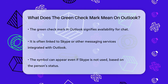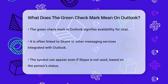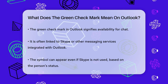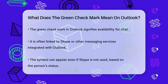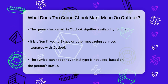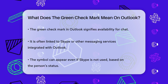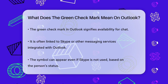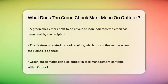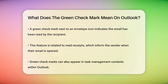When you see a green check mark or tick on someone's profile picture, it usually indicates that the person is available for a chat. This is often related to Skype or other messaging services integrated with Outlook. Even if you don't use Skype, this symbol can still appear if the person's status is set to available.